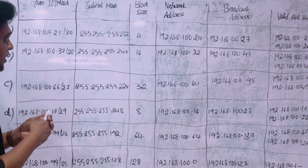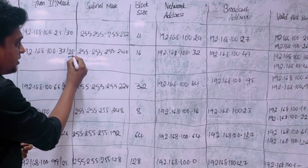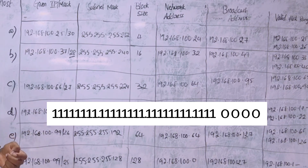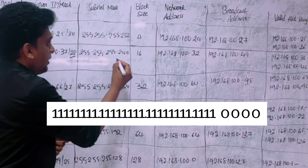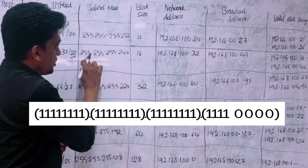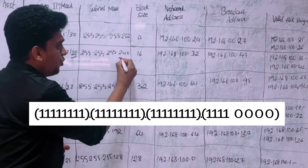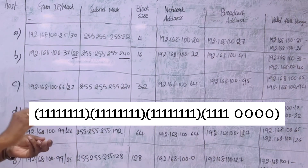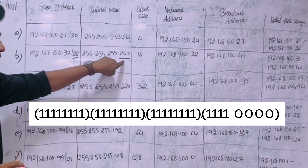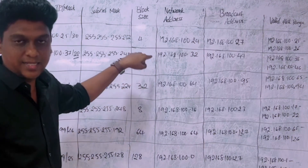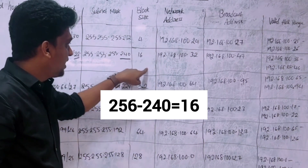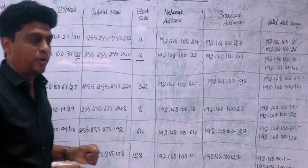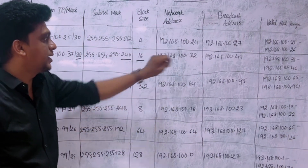For the IP 192.168.100.37/28, we identify the subnet mask by setting 28 ones and remaining four zeros. The subnet mask is 255.255.255.240, because substituting four zeros in the last octet gives 240. The block size is 256 minus 240, which equals 16.